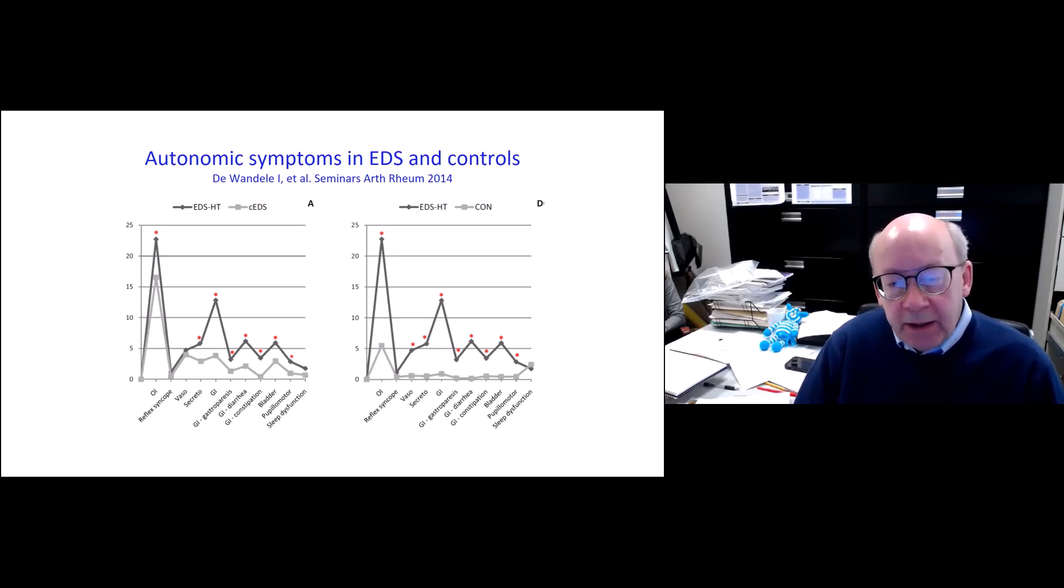And as you can see on the right-hand slide, she's comparing Ehlers-Danlos patients with the hypermobile type with healthy controls on an autonomic symptom questionnaire. And so the first column is for orthostatic intolerance. And you can see very clearly how much more prevalent this is in the Ehlers-Danlos population than in healthy people. On the left slide is the comparison of hypermobile versus classical EDS. And you can see that the classical patients also have a fairly high prevalence of autonomic symptoms, less with regard to gastrointestinal and other autonomic symptoms than the hypermobile type patients.